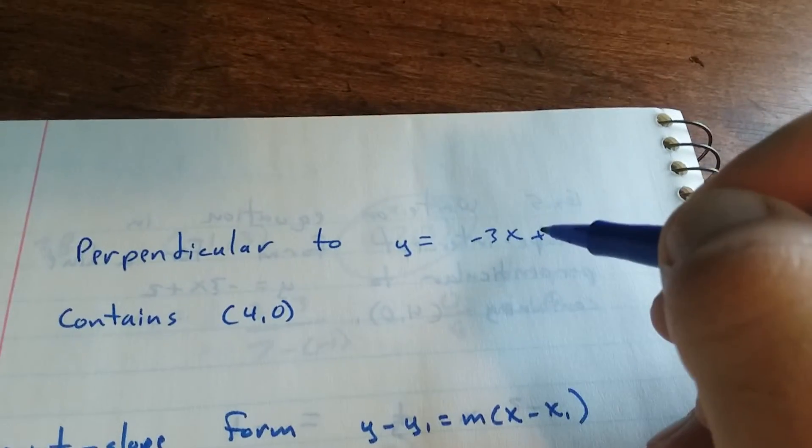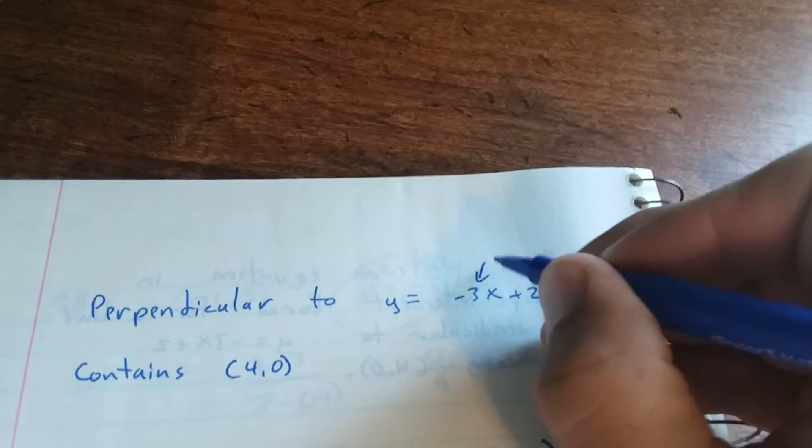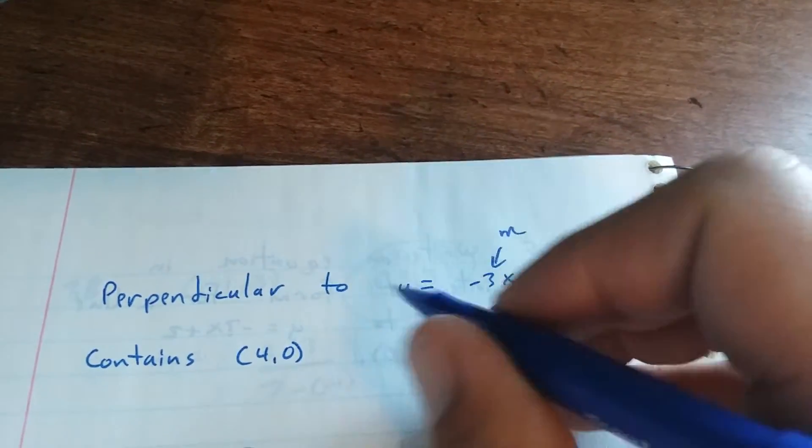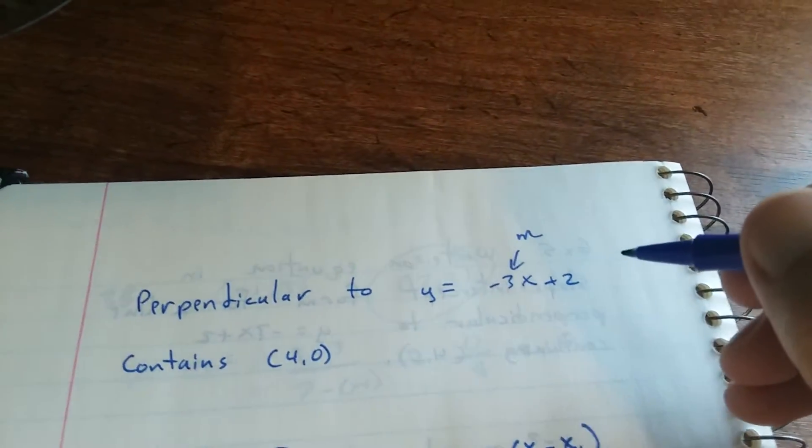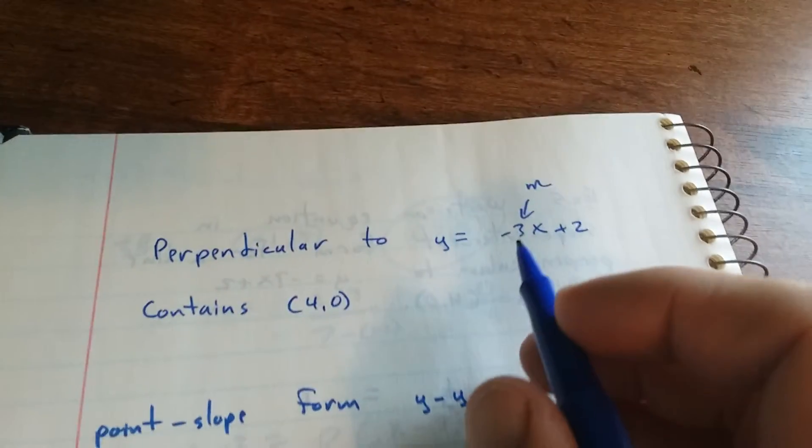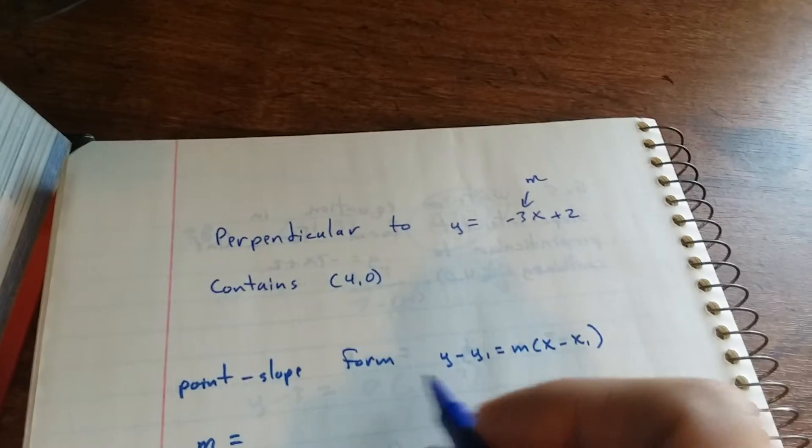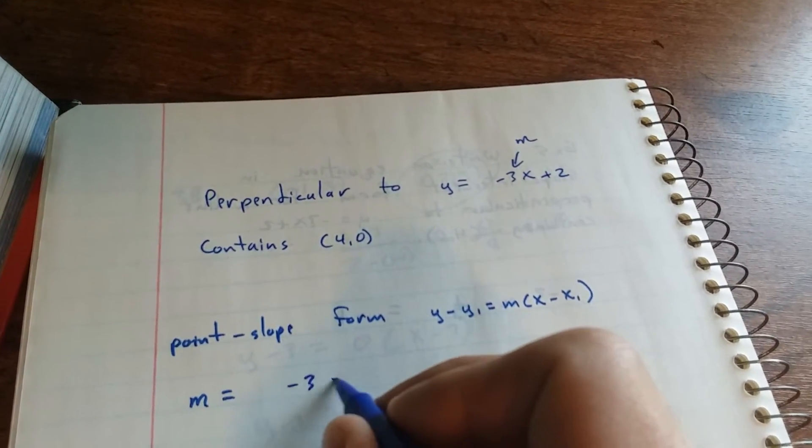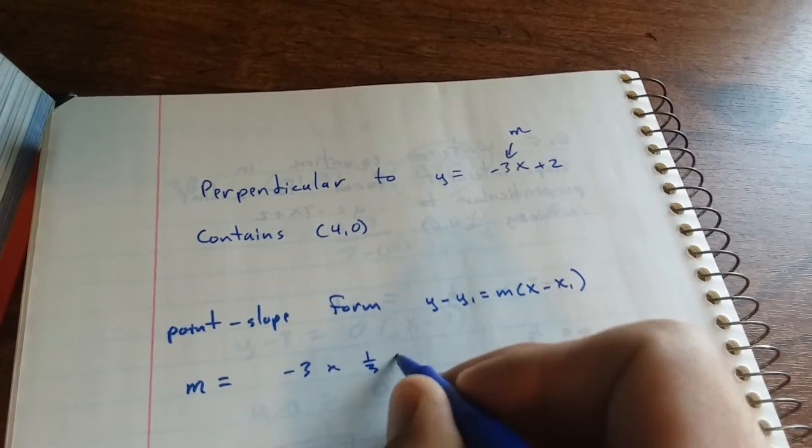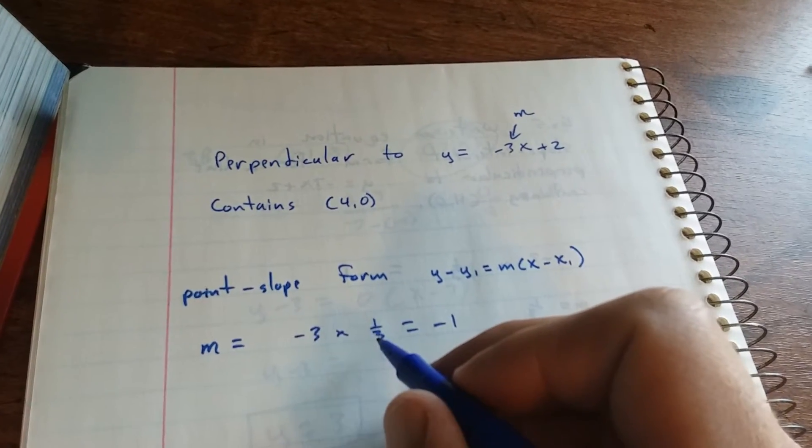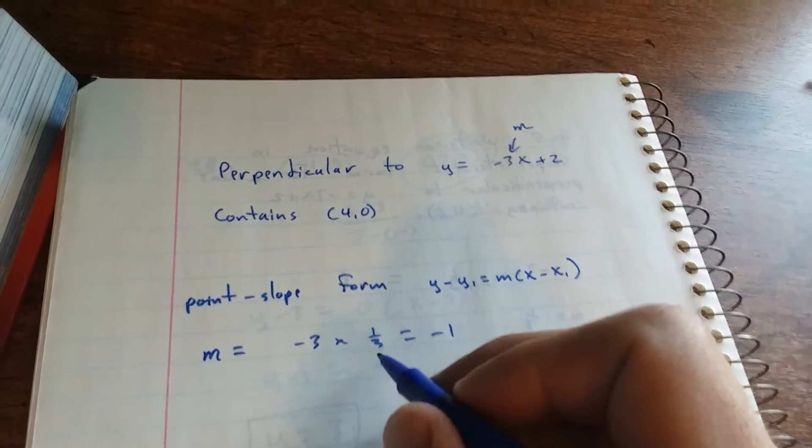Okay, so notice this is in slope-intercept form. So this is m, the slope of this line. To get a perpendicular line, you have to find the negative reciprocal. So negative 3 times 1/3 equals negative 1. So I know the negative reciprocal is going to be 1/3.